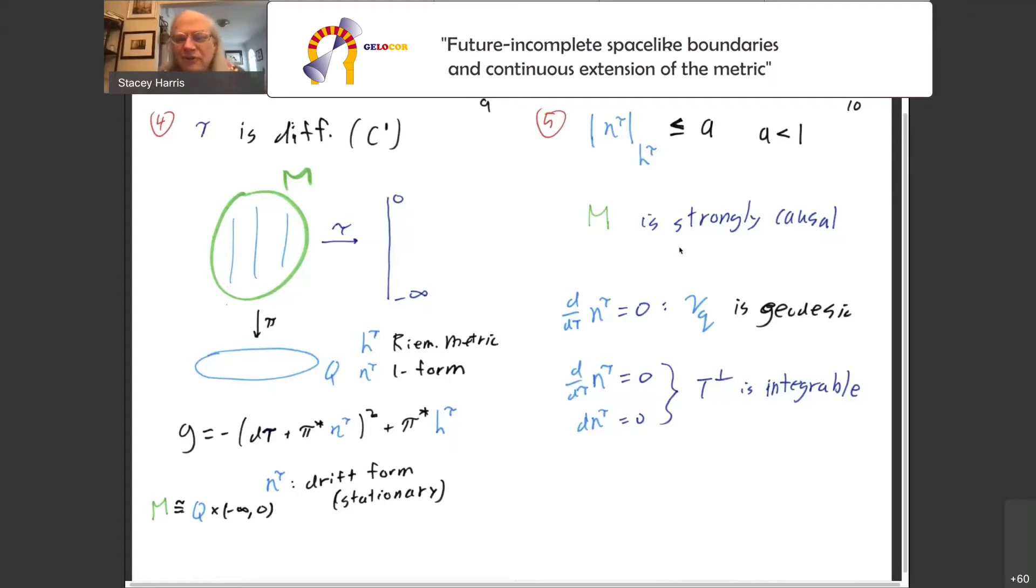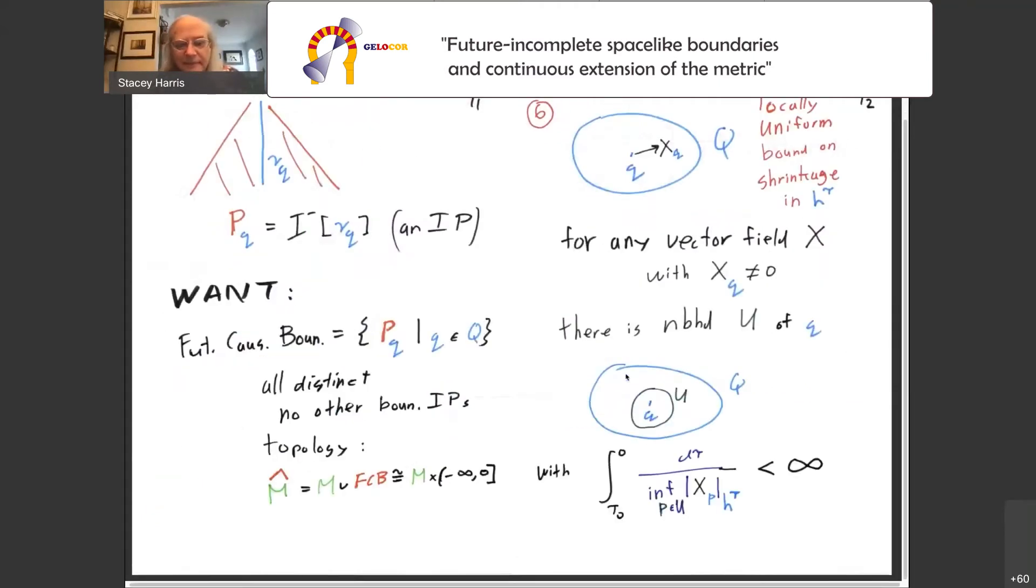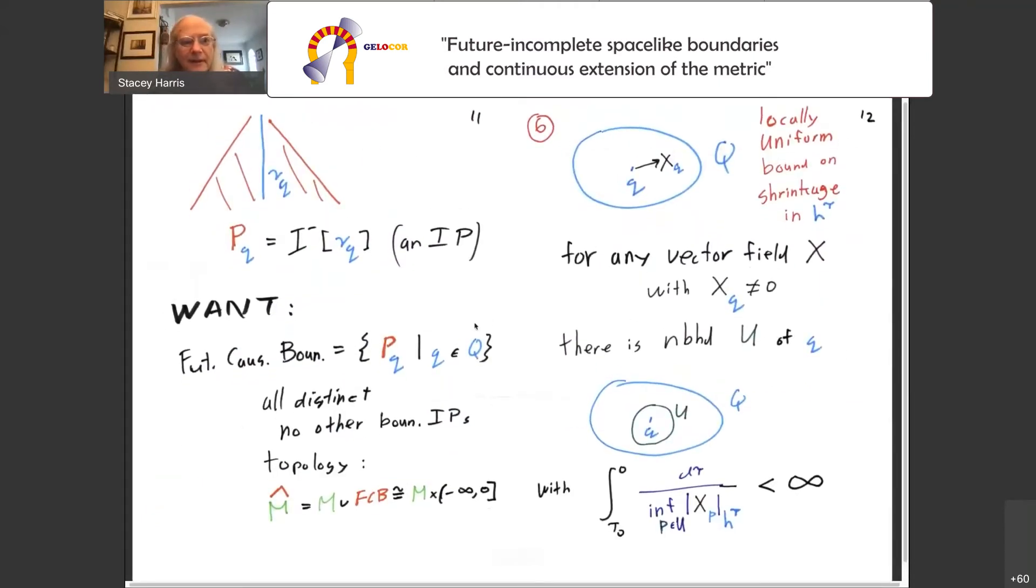Just what is that drift form telling us? First of all, if it's not really time-dependent, if it happens to be constant in tau, that tells us that in addition to eta being constant, it also happens to be a closed one form. This tells us that the perpendicular is integrable. So we get some good geometric information from simplifying what eta is.